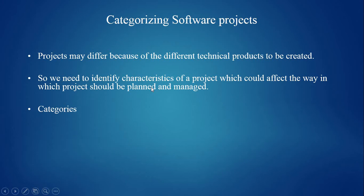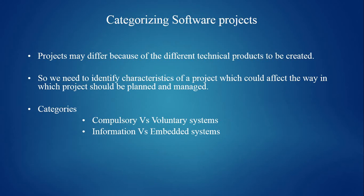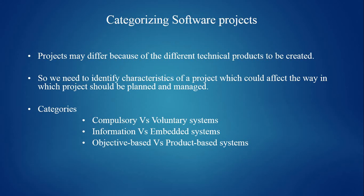The categories are: compulsory versus voluntary systems, information versus embedded systems, objective-based versus product-based systems, and outsourced projects. These are the categories in which we are categorizing software projects.